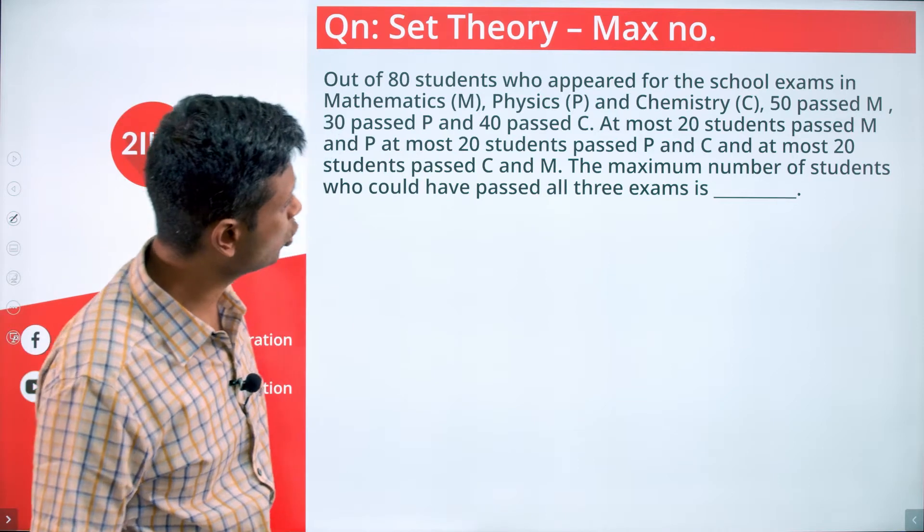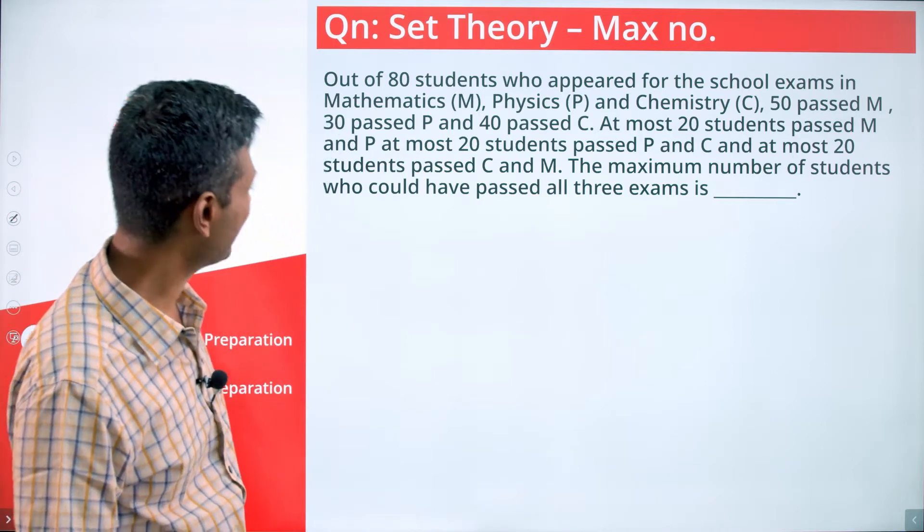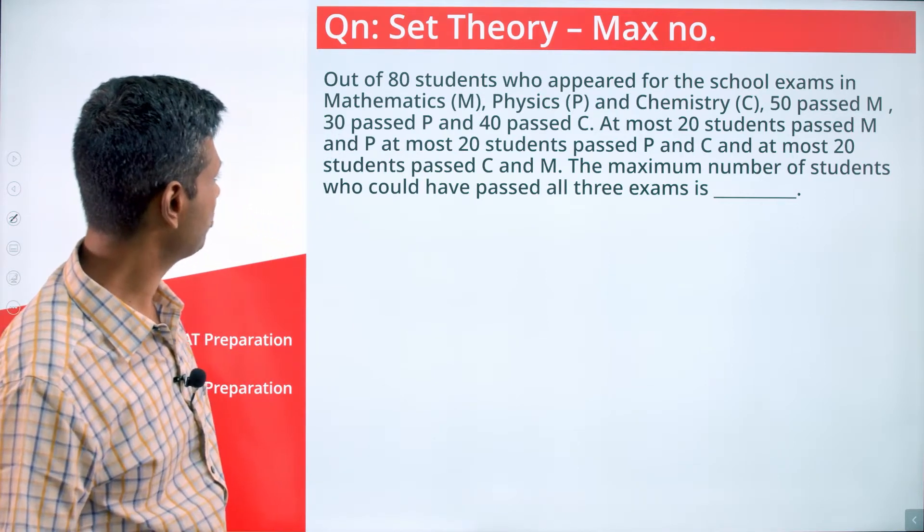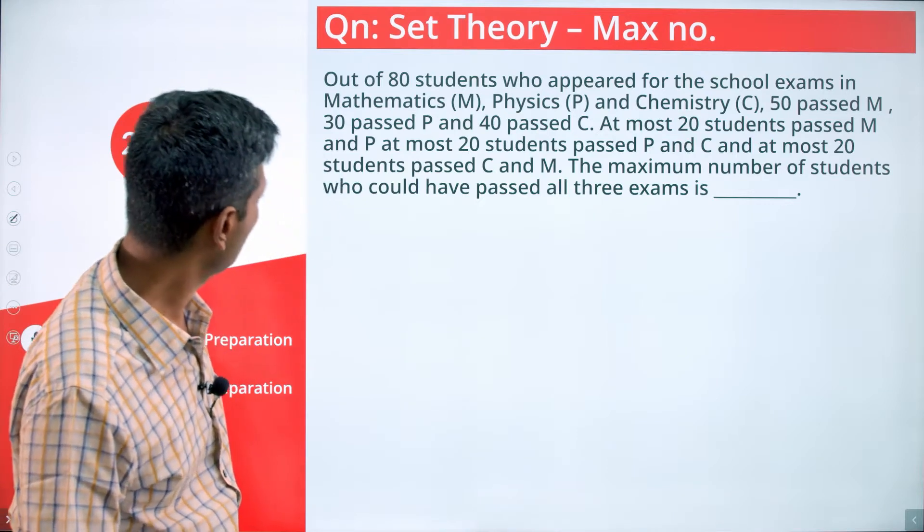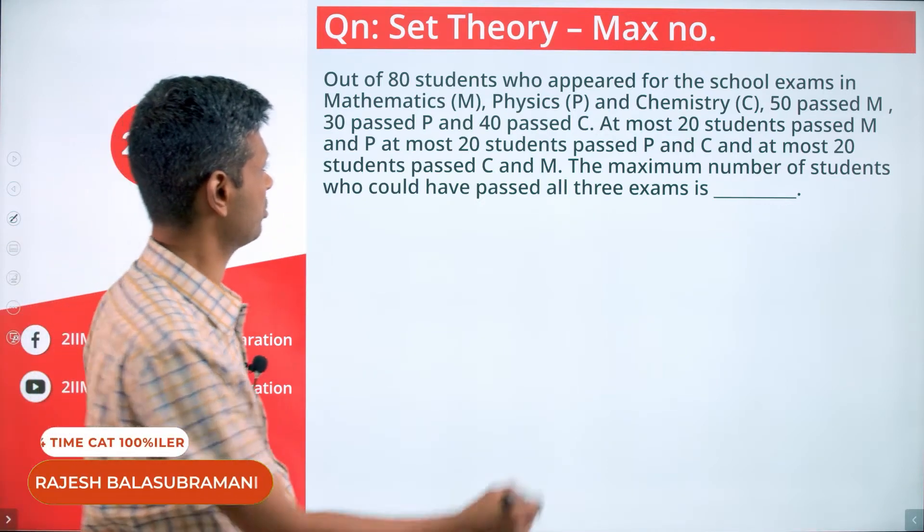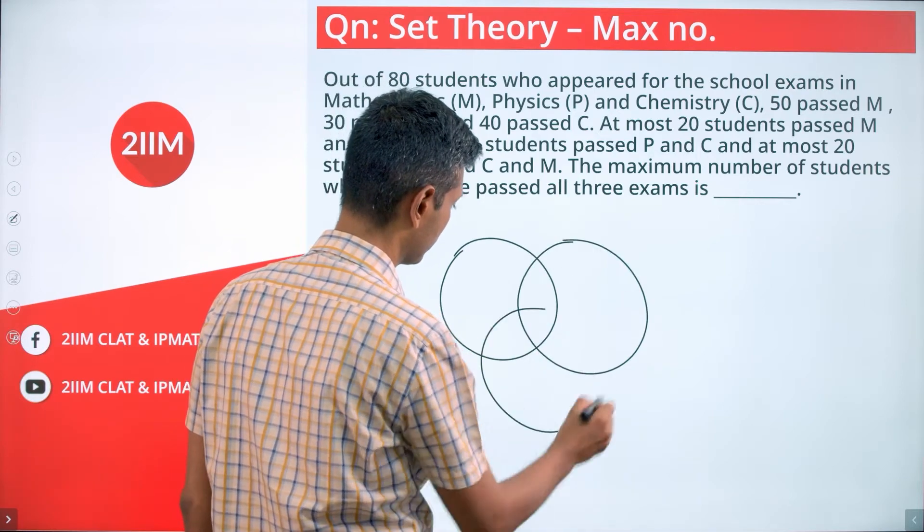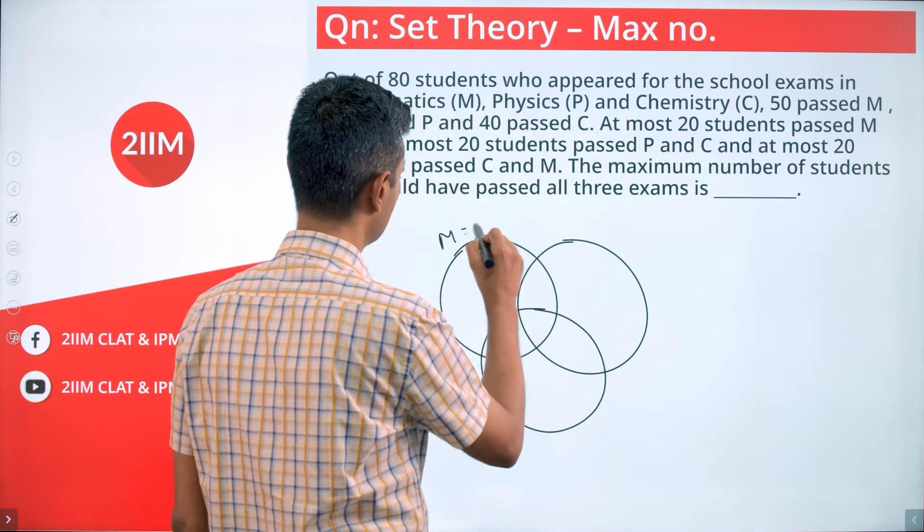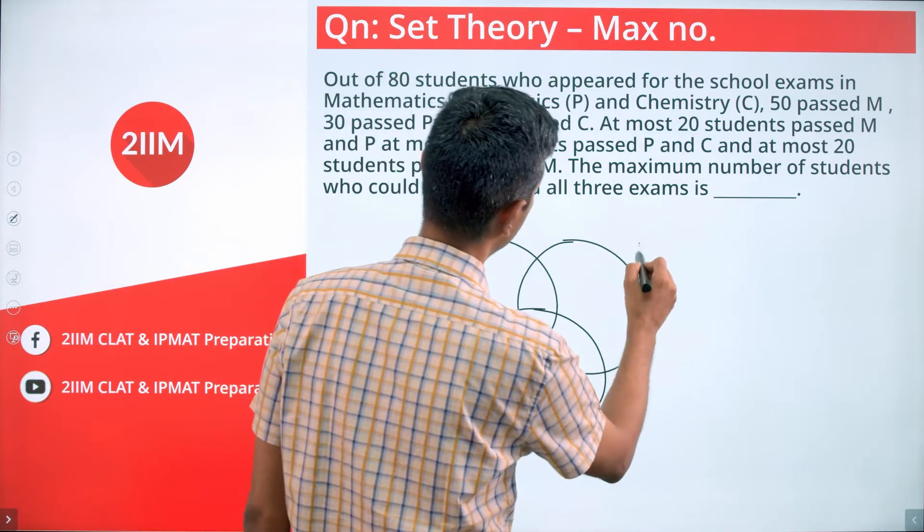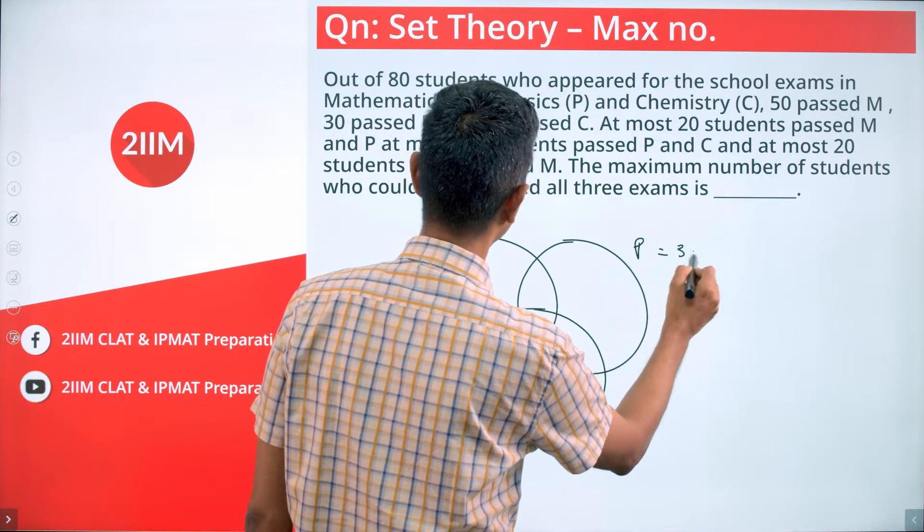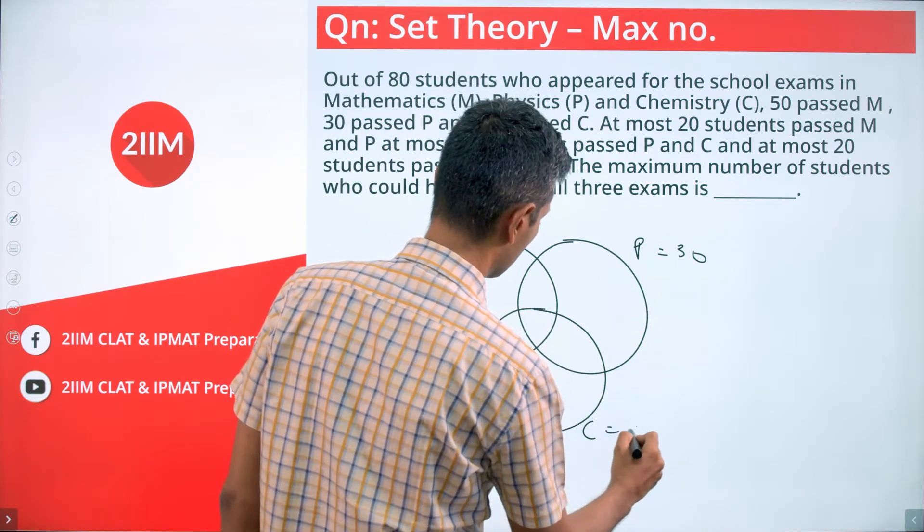Out of 80 students who appeared for the school exams in math, physics, and chemistry, 50 passed math, 30 passed physics, and 40 passed chemistry. It's like a classic set theory question. Math is 50, physics 30, chemistry is 40.